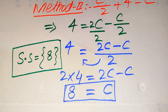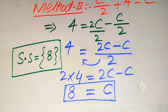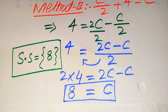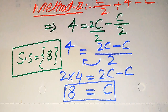The roots which satisfy the given equation are called solutions, and the roots which do not satisfy the given equation are called extraneous roots. Here we cannot get any extraneous root; we have only one solution, and that is C equals 8. This is our final answer. Thank you for watching this video — please subscribe to my channel for more exciting videos.